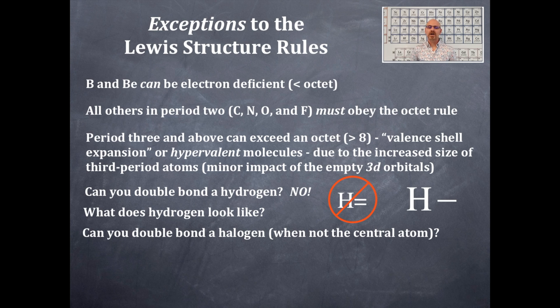Can you double bond a halogen? Fluorine, chlorine, bromine, iodine. Those are the halogens. When they are not a central element, can you double bond them? It would look like this. What do you think? The answer? Again, a resounding absolutely no way, no how.